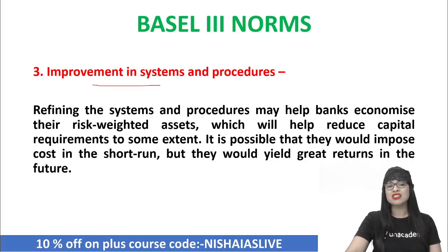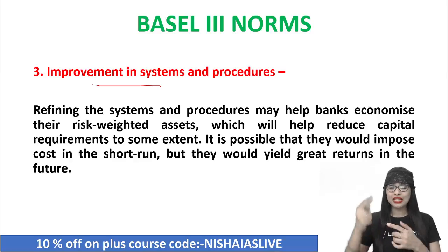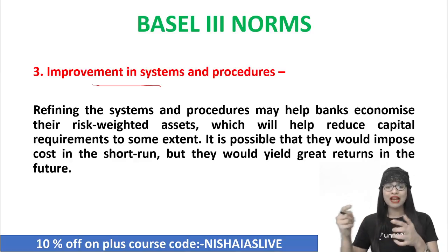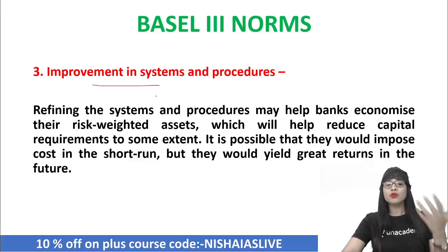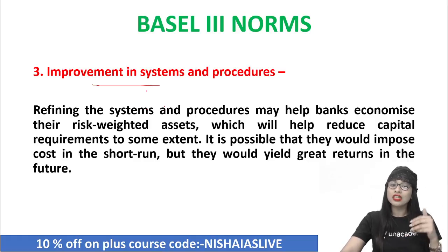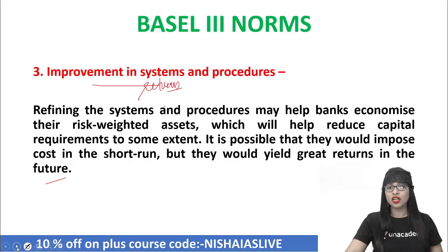Next is improvement in systems and procedures. That is indeed very important because when you start refining the system and procedure, it will help the banks to economize all their risk-weighted assets. Automatically it will help in reducing whatever capital requirements they have to some extent, and they can manage properly. Though they would impose a cost in the short term, still they will be getting better returns in future. So the returns are assured for them. These are the way forward — suggestions to overcome the issues or challenges with regard to the implementation of Basel 3 norms for our country India.